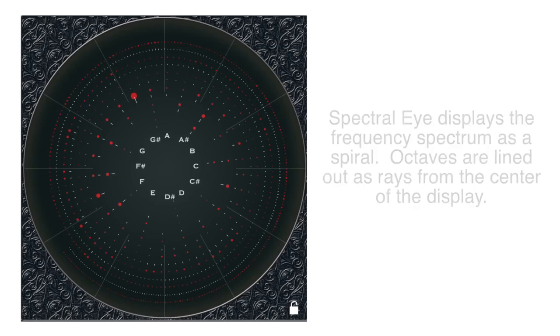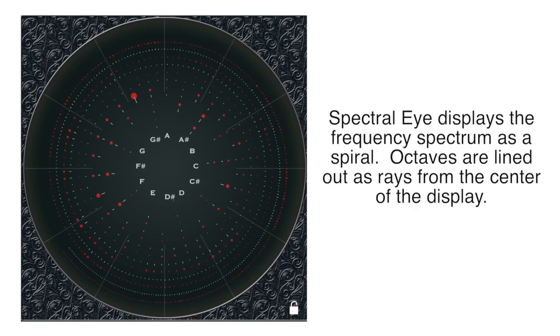SpectralEye provides a unique way to visualize the different frequencies. By wrapping the frequency spectrum in a spiral, notes at different octaves line up, and it's easy to see harmonics and overtones.